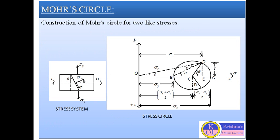To construct Mohr's circle, we draw normal stresses on the horizontal axis and tangential stresses on the vertical axis (as the ordinate). Normal stresses positive are drawn to the right side of the origin, tangential stresses positive are in the downward direction, and angle 2θ is positive when taken as counterclockwise. Before drawing the Mohr's circle, I will show you how to apply the sign convention.